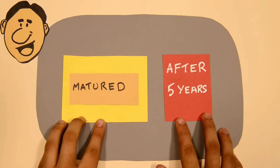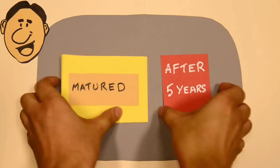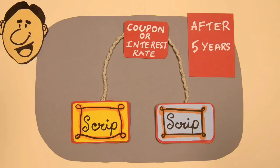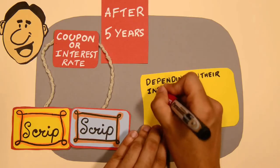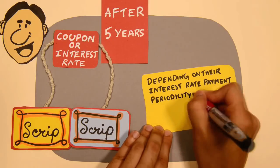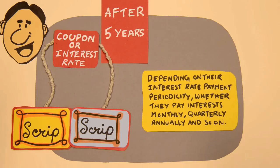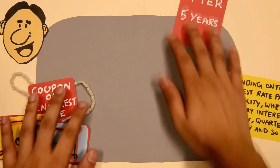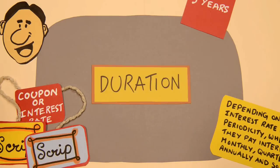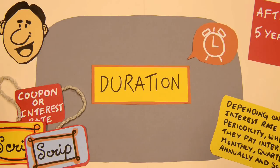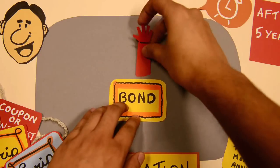Two scripts with the same coupon or interest rate that mature after five years will react to interest rates differently, depending on the interest rate payment periodicity — whether they pay interest monthly, quarterly, annually, and so on. A slightly better figure to look at is duration, expressed in years. Duration tells you the time it will take for a bond to repay its value.